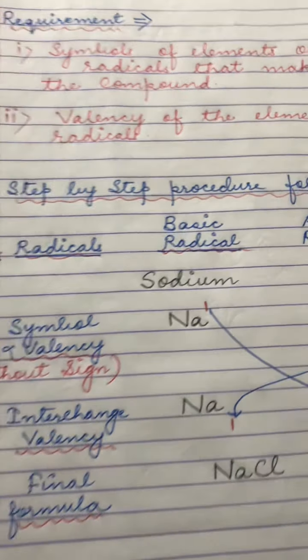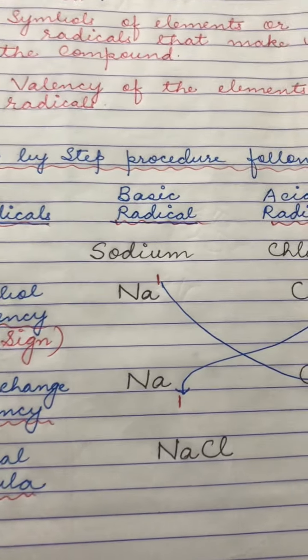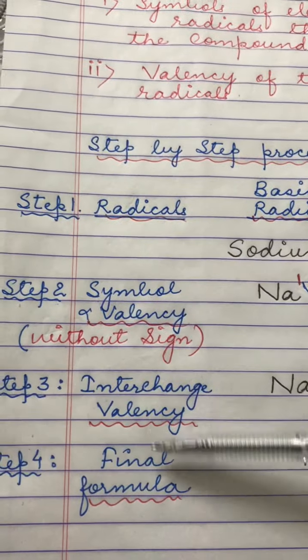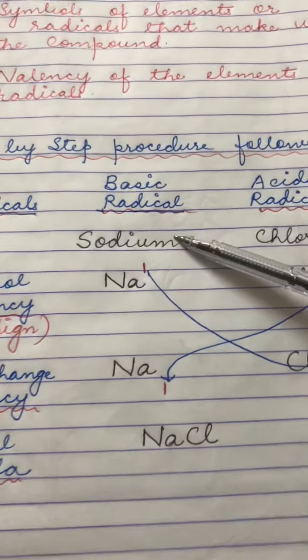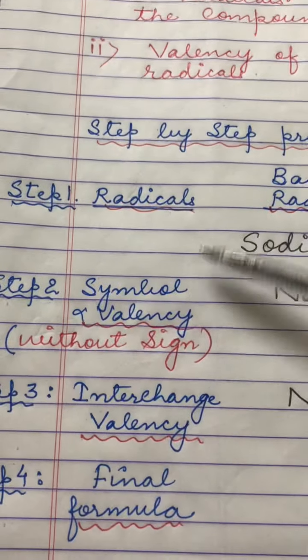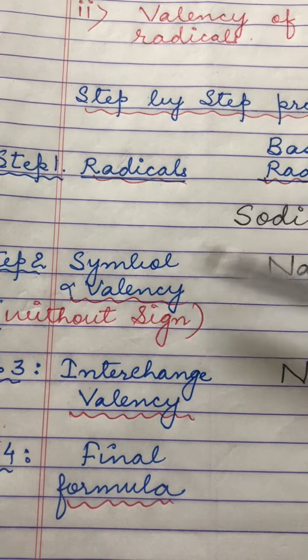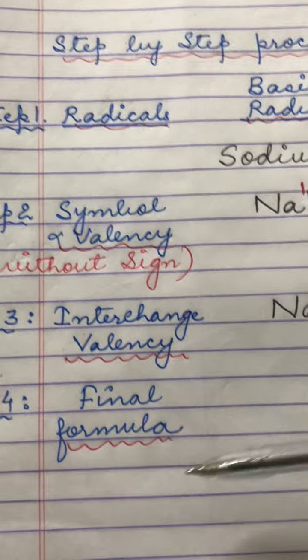Now this is the step-by-step procedure followed for writing any chemical formula. The three major steps which are followed is that you first need to write the radicals, that means whether it's a basic radical or an acidic radical. Then you need to write the symbol and valency of the radicals without putting their signs. You do not put the plus or the minus sign of radicals. And finally you interchange the valency and you come to the conclusion of getting the final formula.